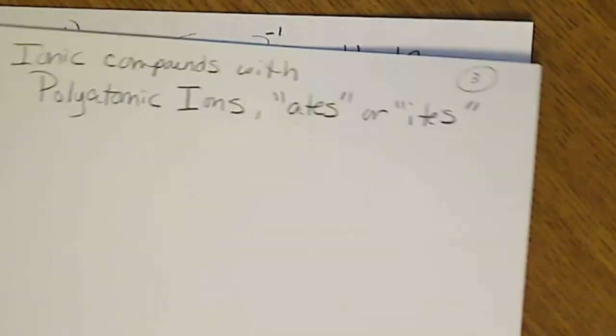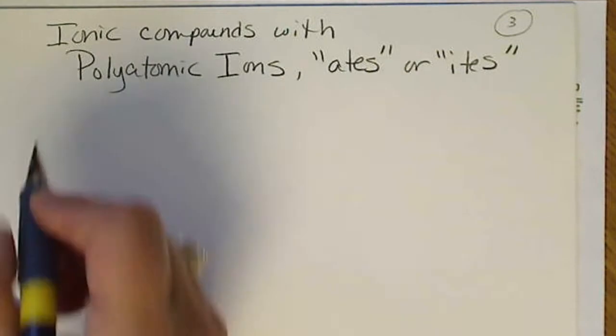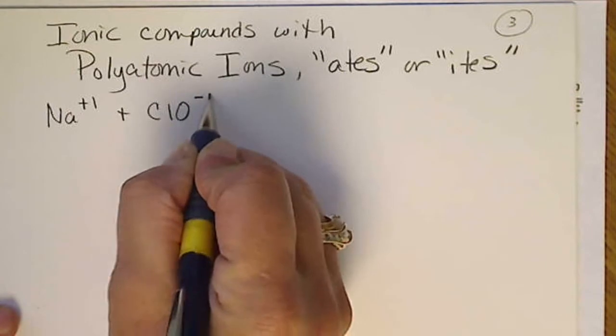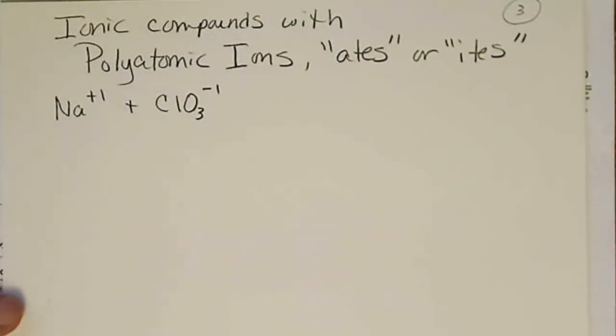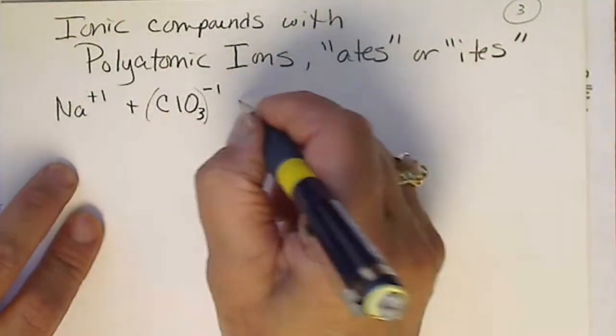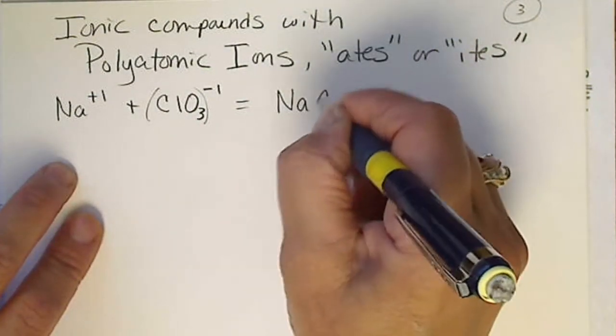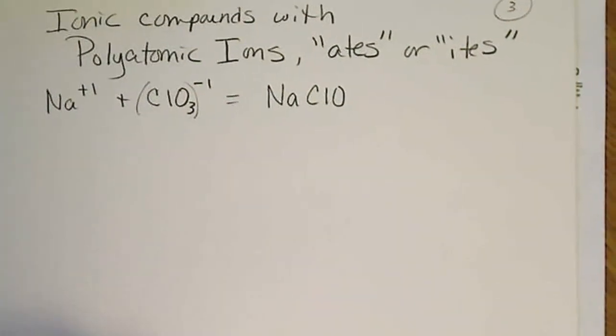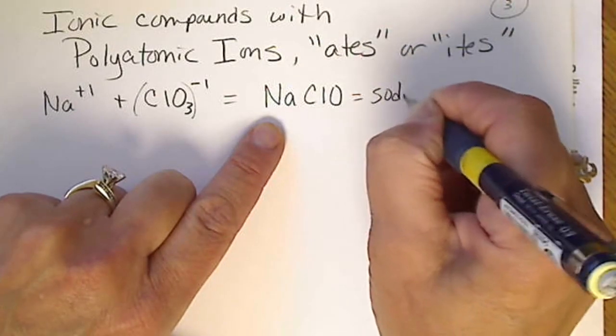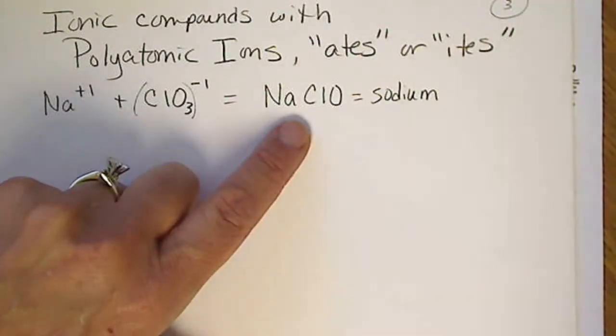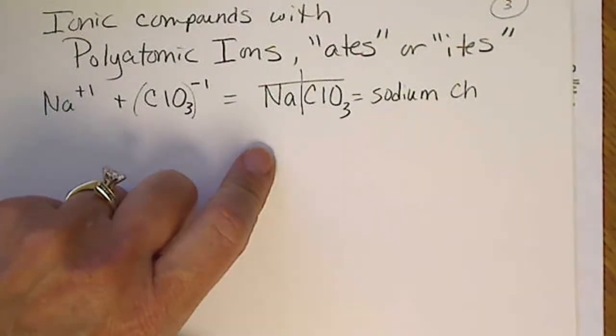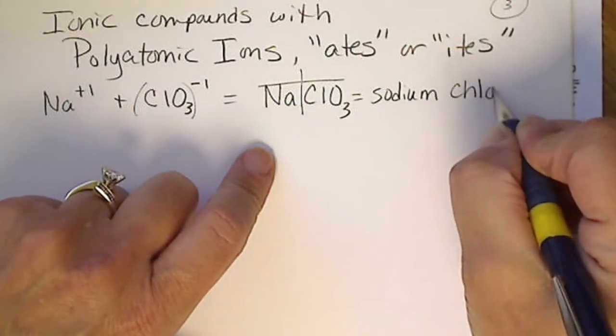So if we go over here and look at sodium, which will have a plus one, with chlorate, chlorate has a minus one. This entire thing acts as one group, so the charges cancel to zero as long as we have a one-to-one ratio. And the name of this, because sodium always has one charge, we don't have to put a Roman number with it. This is just sodium, and the ClO3 is chlorate.